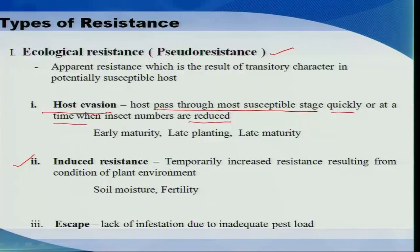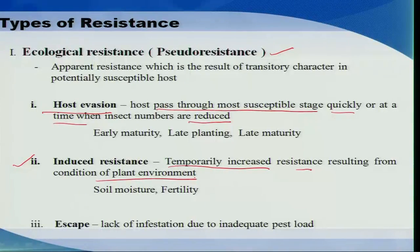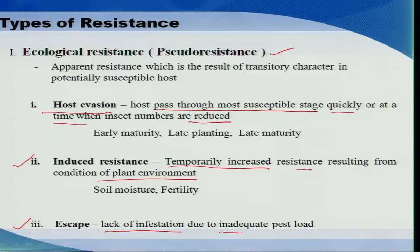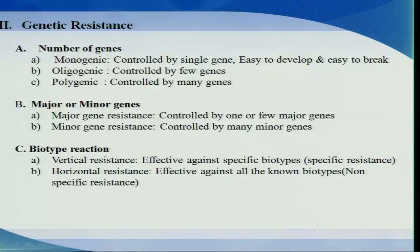The second sub-type is induced resistance — a temporarily increased resistance resulting from certain changes in the plant environment, such as irrigation or fertilizer application that boosts plant vigor, making it more tolerant or resistant to insect attack. The third sub-type is escape, which is simply a lack of infestation due to inadequate pest load. These are the mechanisms of resistance exhibited by plants due to ecological factors.